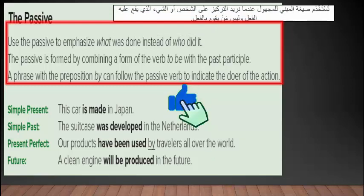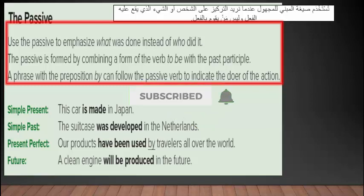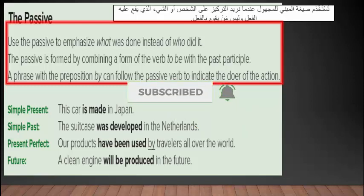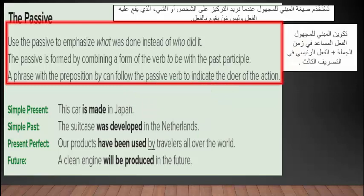Use the passive to emphasize what was done instead of who did it. استخدم صيغة المبني للمجهول عندما نريد التركيز على الشخص أو الشيء الذي يقع عليه الفعل وليس من يقوم بالفعل. The passive is formed by combining a form of the verb 'to be' with the past participle — الفعل المساعد في زمن الجملة زائد الفعل الرئيسي بالتصريف الثالث.